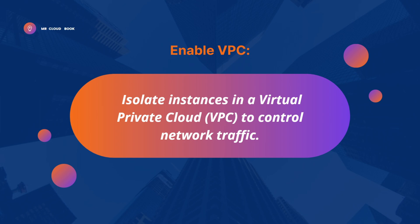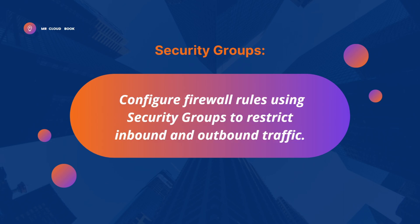For the third tip, security groups — configure firewall rules using security groups to restrict inbound and outbound traffic. Security groups are like bouncers at a club: you define rules to permit or deny traffic to and from your EC2 instance. For example, you can set a security group for your database server that only allows inbound traffic from the web server, effectively blocking other unauthorized access.